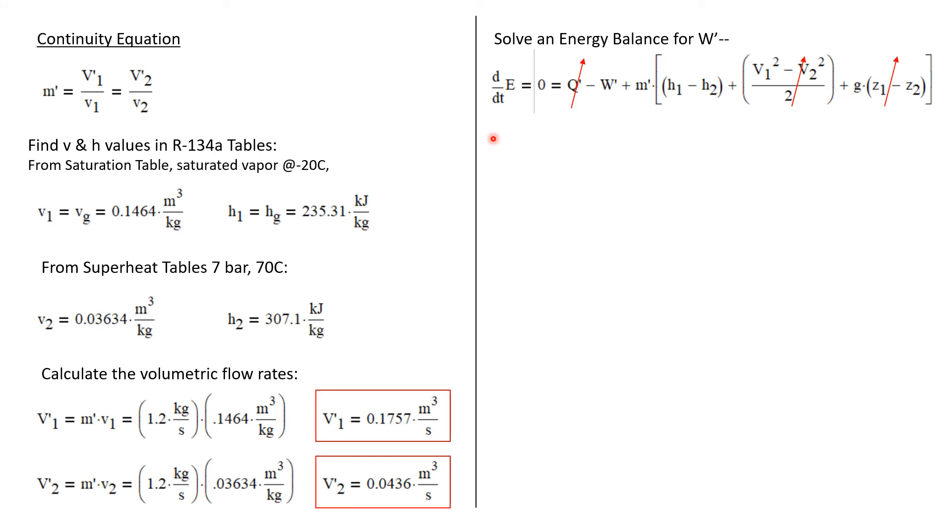Now we'll find our work term from an energy balance. We know dE/dt is 0 because it's operating in steady state. And that's equal to Q dot minus W dot plus M dot times change in enthalpy plus change in kinetic energy plus change in potential energy.